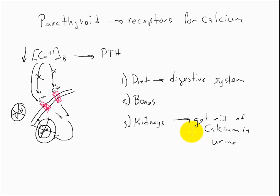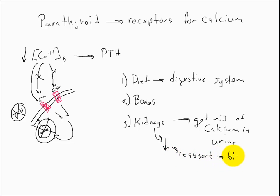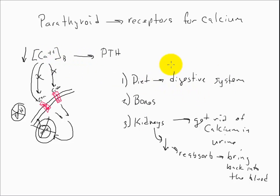If we have too much calcium we get rid of more of it, but the other side is if calcium in the kidneys gets low, we reabsorb it — bring it back into the blood. So we have three systems we can work with: if calcium is too low or too high, we can alter the digestive system, affect the bones, and change the amount of calcium excreted in urine.